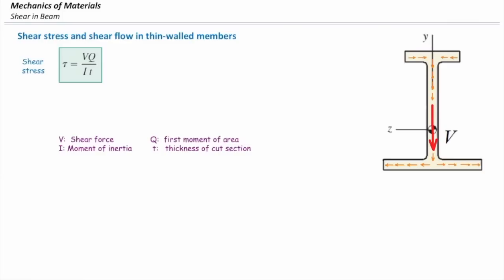In addition to shear stress, we sometimes use shear flow. Shear flow is simply shear stress times thickness. We use Q for that, and that is tau times T. The equation for determining shear flow is simply VQ over I.